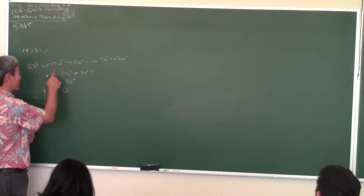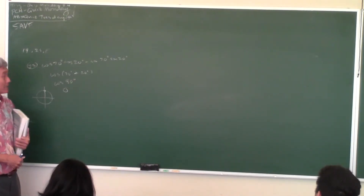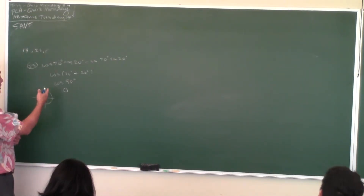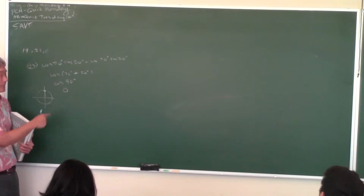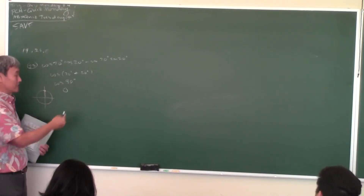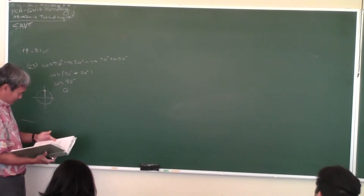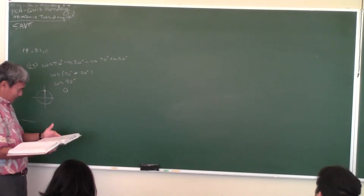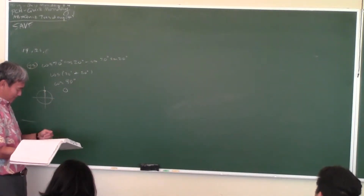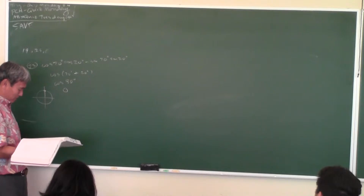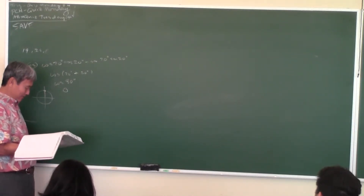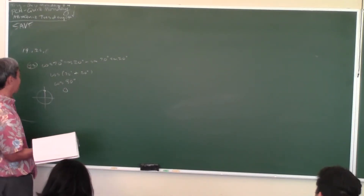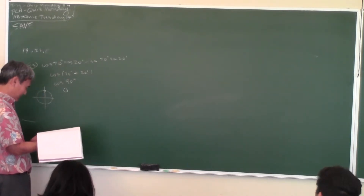So you've got to recognize that identity. In fact, I'm going to have two or three of these on the quiz because you just have to recognize the identities. How come that one was the hardest? How come you guys didn't have problems with 25, 27, and 29? That's bizarre.